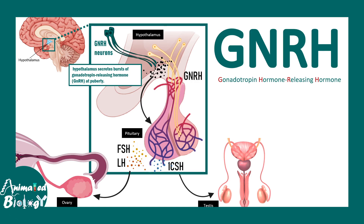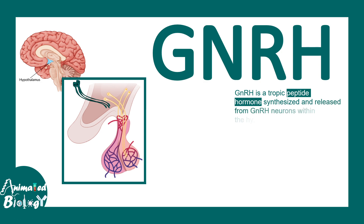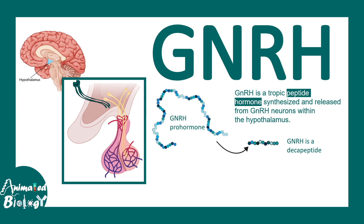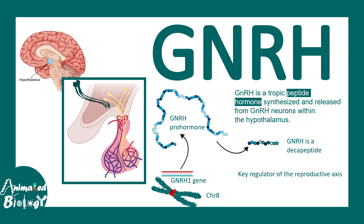In this video we'll talk about Gonadotropin Hormone Releasing Hormone, or GnRH. GnRH is a peptide type hormone synthesized and released from the GnRH neurons within the hypothalamus. It's a hypothalamic hormone which is a decapeptide, and it is synthesized from a GnRH prohormone. This prohormone is synthesized by the GNRH1 gene located on chromosome 8. GnRH is a key regulator of the reproductive axis.